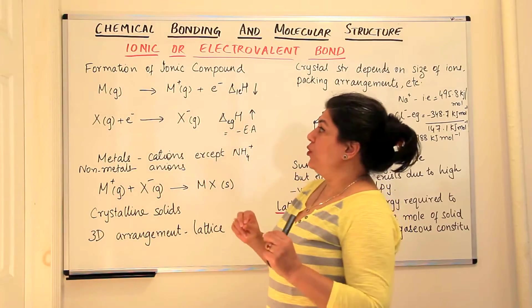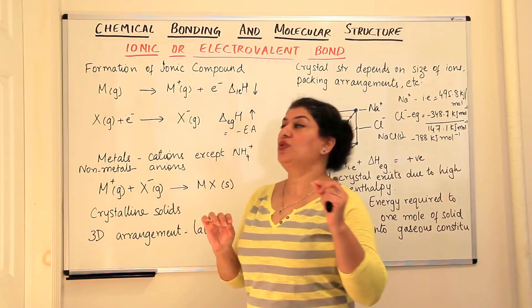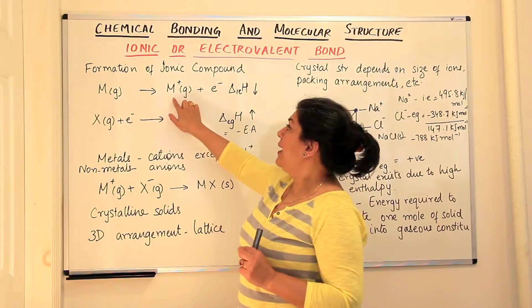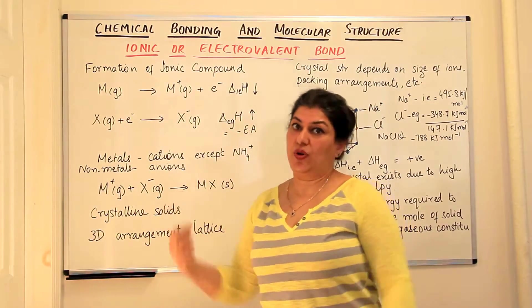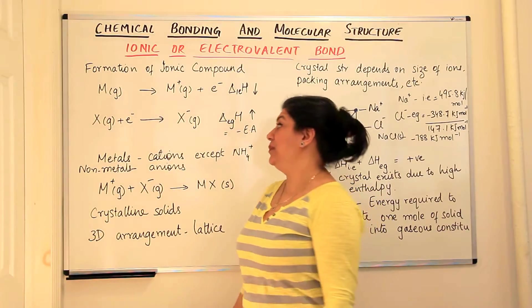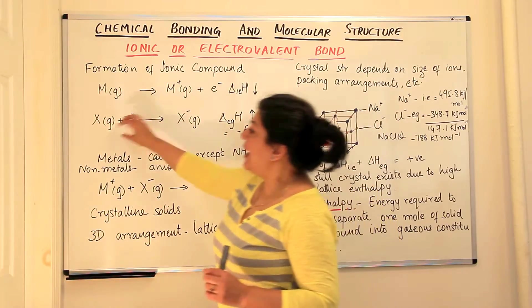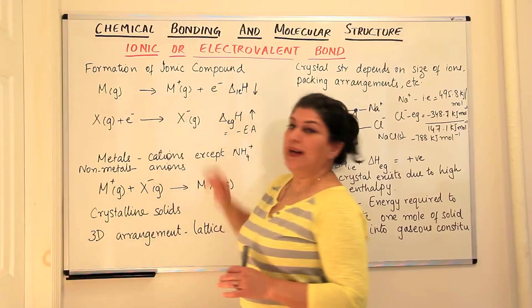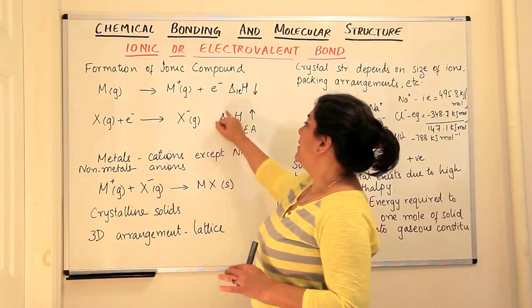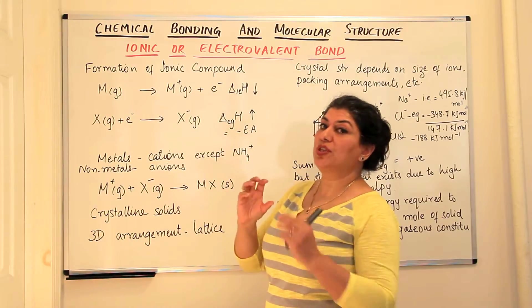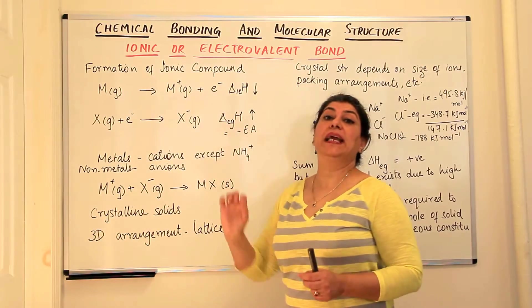According to the Causal Lewis approach, a metal atom when it loses an electron forms a positive ion known as a cation, and the energy required to remove that electron is known as the ionization enthalpy. Similarly, if you have a non-metallic atom and you add an electron to it, it forms an anion — a negatively charged ion — and the energy change involved in this reaction is known as the electron gain enthalpy.